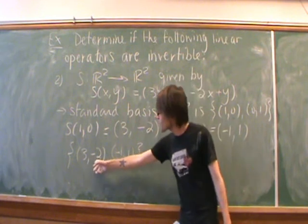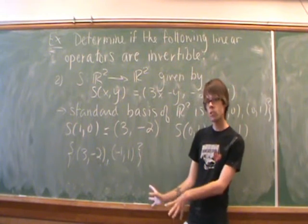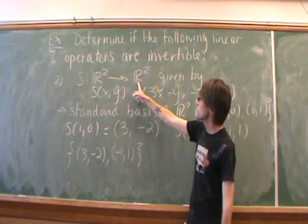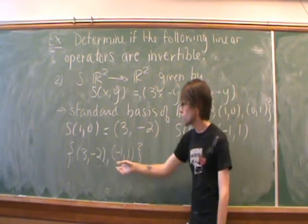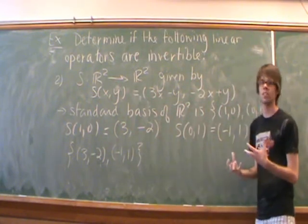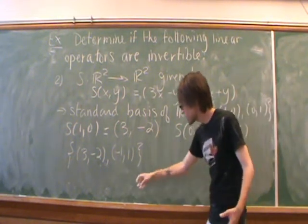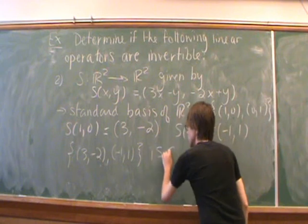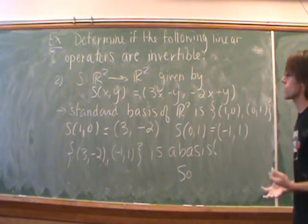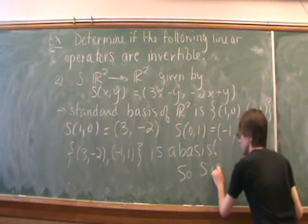So because this only has two vectors in it, and these vectors are not scalar multiples of each other, they must be linearly independent. We know that the dimension of R² is 2. So we have two linearly independent vectors. They must form a basis for R² by some theory that we've seen before. So in fact, this set here is a basis for R².